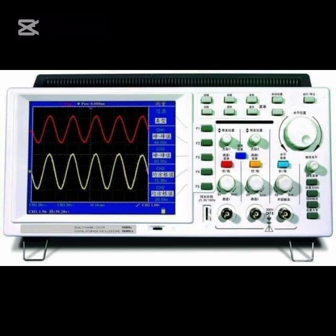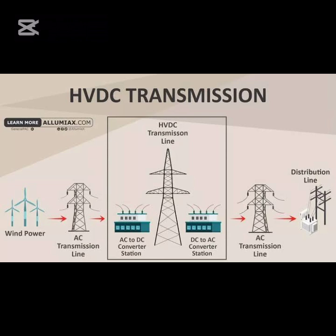The third cause is supply frequency. The Ferranti effect is directly tied to the reactive power generated by the shunt capacitance in power lines, which requires a non-zero frequency. Since DC has zero frequency, it doesn't experience the Ferranti effect. In contrast, high frequency transmission lines are more susceptible to this phenomenon due to increased reactive power generation.